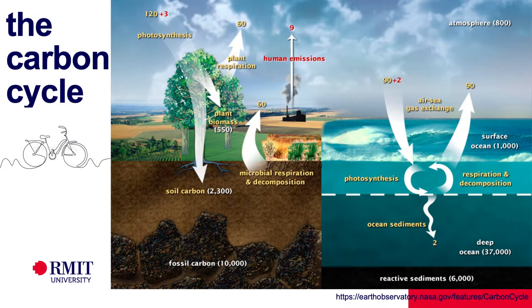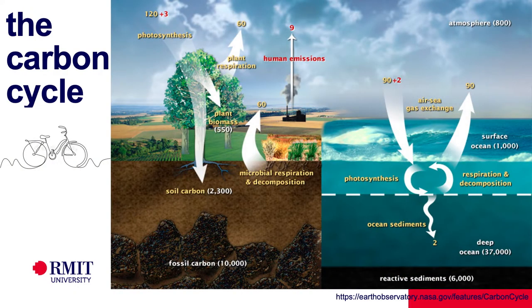Many of you will have seen different representations of the carbon cycle. I tend to focus my research and the research of my group on the atmosphere, plant, soil side of things. I don't work in the oceans, but it's important to acknowledge that the atmosphere-ocean interface is an important part of the carbon cycle. So when I see this diagram, I always hone in on the soil carbon part. You can see a big white arrow going from a tree down into the ground.